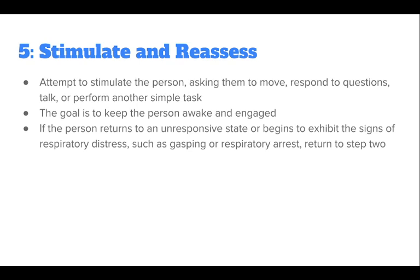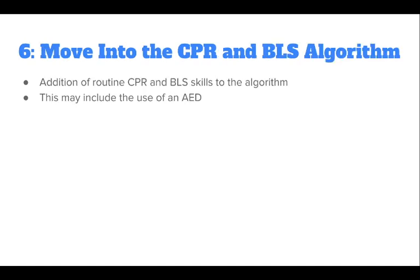If the person returns to an unresponsive state or begins to exhibit signs of respiratory distress, such as gasping or respiratory arrest, return to Step 2. The next step adds routine CPR and BLS skills to the algorithm, including use of an AED with proper pad placement and administering a shock if the person enters cardiac arrest with a shockable rhythm. For two-person CPR, naloxone should be administered every four minutes — simply administer naloxone after completing two two-minute switches.